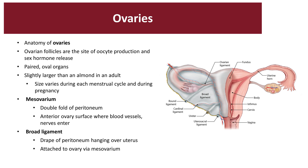The nerve supply of the ovary comes from the sympathetic axons of T10, and the parasympathetic axons come from the vagal nerve. The outer layer is called the cortex, and the inner region called the medulla contains the branching blood vessels, lymph vessels, and nerves.